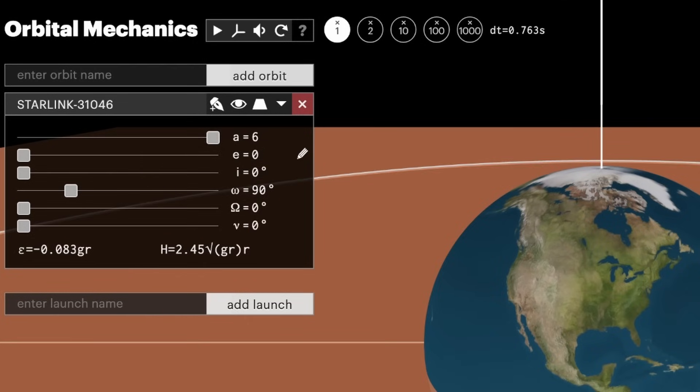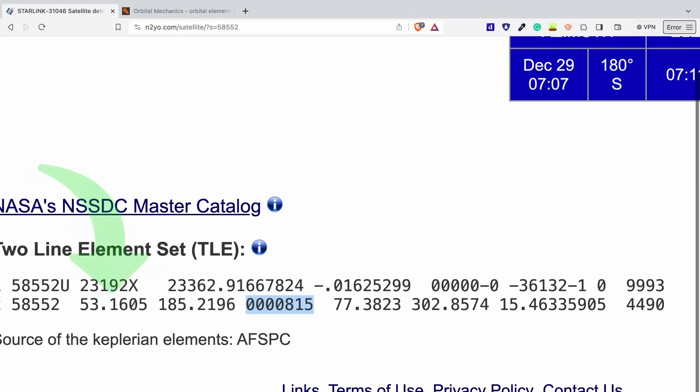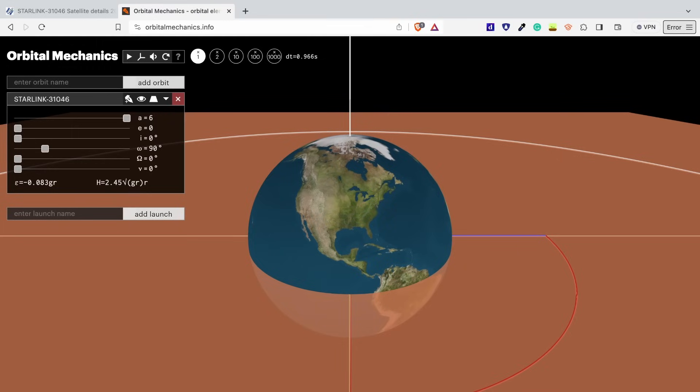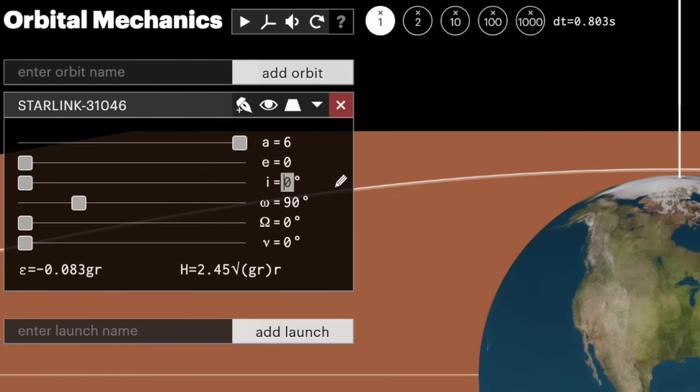This third value here is inclination, which is the tilt of the orbit. The inclination is listed as 53.1605. We're going to round to 53, so I'm going to click on this value here, and I'm going to type in 53, and then click Enter.